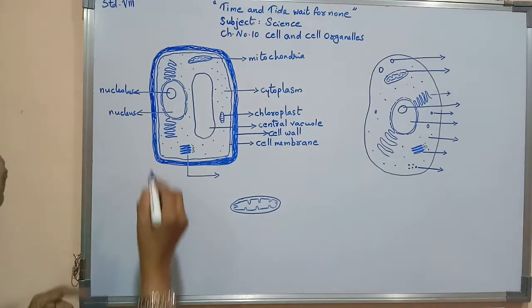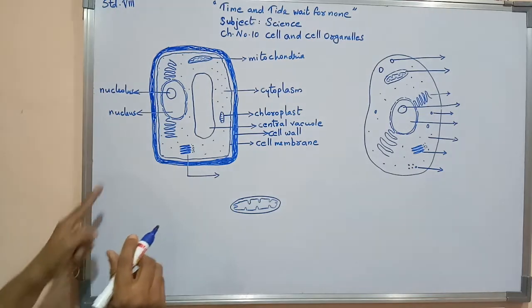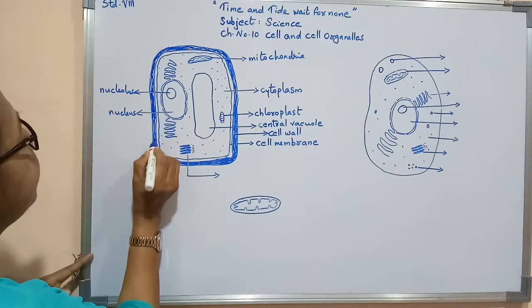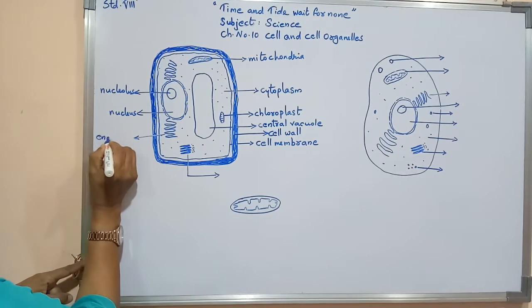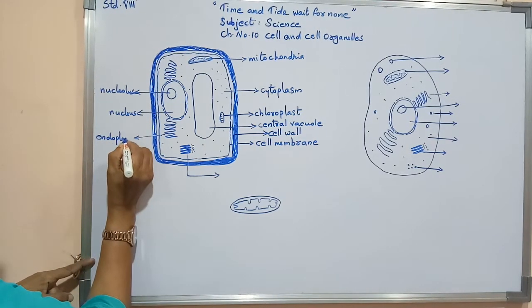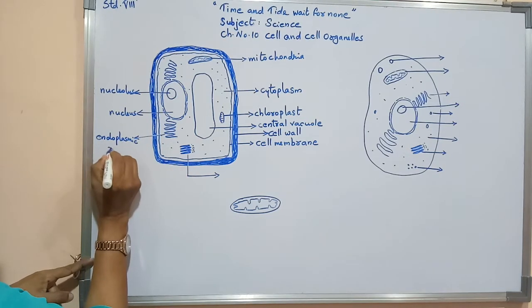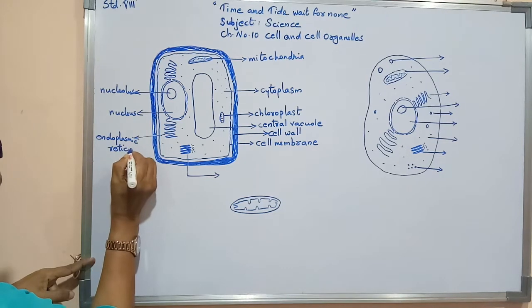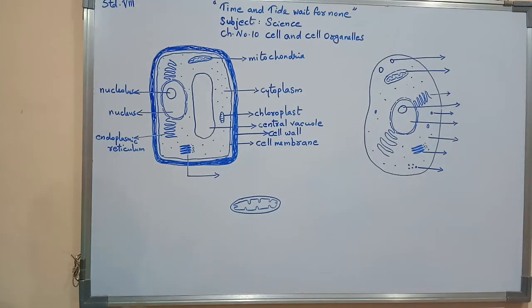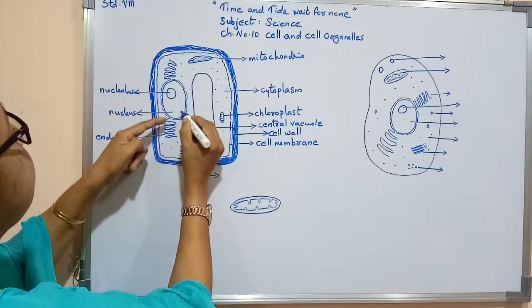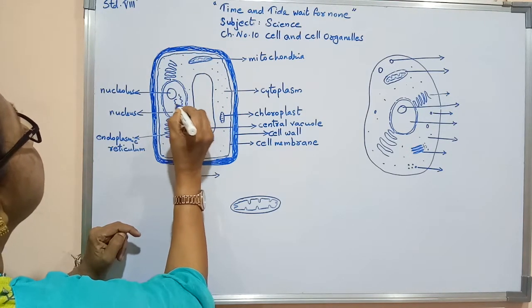Connected to the nucleus, a particular membrane — a ribbon-like structure — is present. This is known as the endoplasmic reticulum. Inside the nucleus you can find thin fibers.